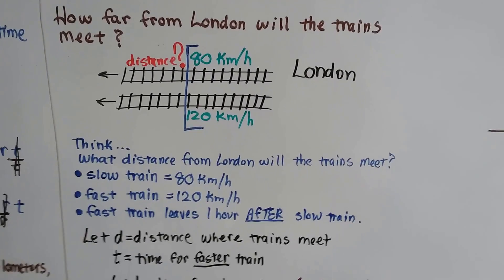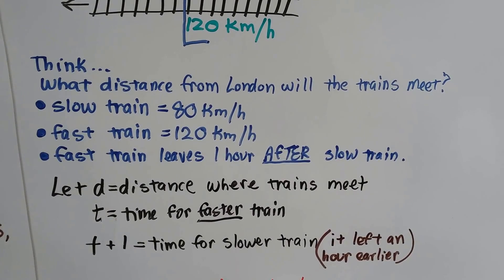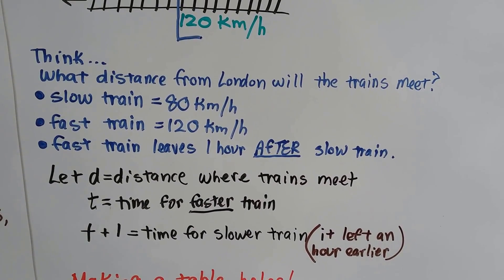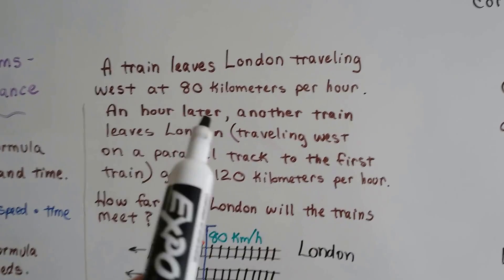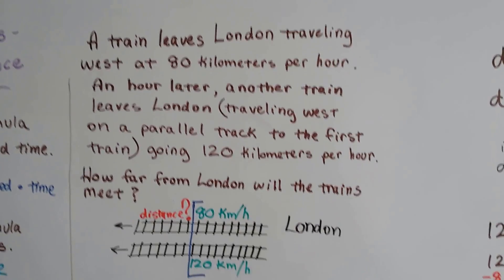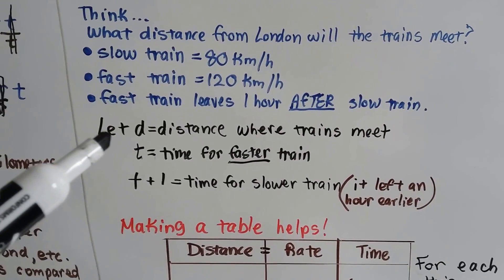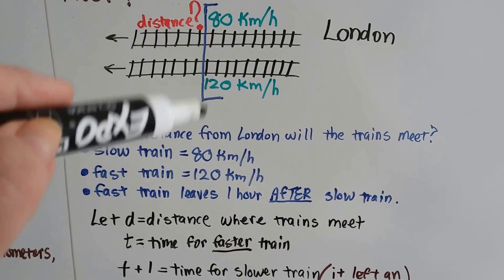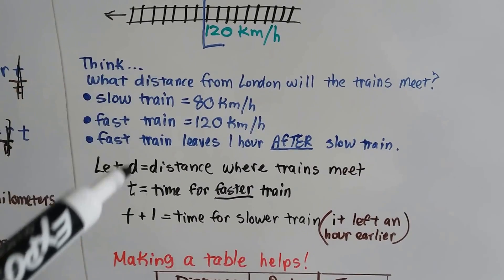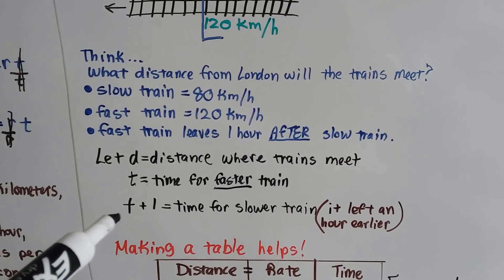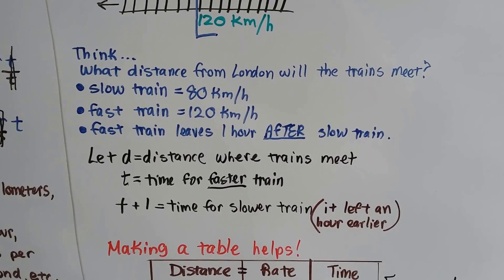At what distance from London will they meet? The slow train is going 80 kilometers per hour, the fast train is going 120 kilometers per hour, and the fast train leaves one hour after the slow train. Let d equal the distance where the trains meet. T is the time for the faster train, and t plus one is the time for the slower train because it left an hour earlier. It had an hour head start.